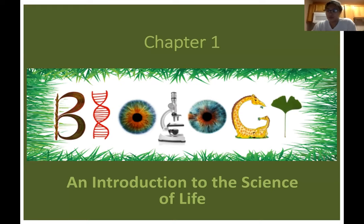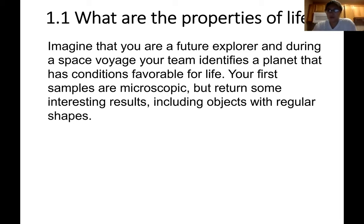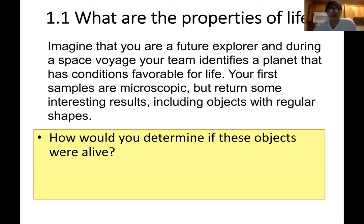Moving into Chapter 1 - this is just an introduction to science. First, just a reflection question to get you thinking: if you were a future explorer and you found a planet during your voyage that had conditions favorable to life, you're taking samples and they're small - microscopic - but you get interesting results. Some have regular shapes and patterns in them. Based on that, how would you determine if these objects were alive? What kind of characteristics do you think would be important to life?